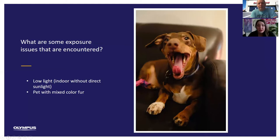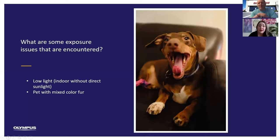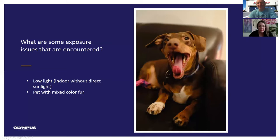You can use exposure compensation to change that, and since what you see is what you get, you can see it in real time. As a general rule, you can overexpose just slightly with a digital camera because you can pull those highlights back down. I was always taught, coming from film, that you underexpose if something is harder to expose for and bring the shadows back out to get more detail. But nowadays it is kind of the opposite.